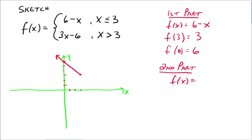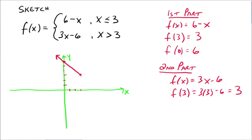Now let's do the second part: f of x equals 3x minus 6. We figure out what's going on at x equals 3, even though we're not allowed to use 3 for this piece. That would be 3 times 3 minus 6, which is 9 minus 6, which is also 3. So we get the ordered pair 3, 3 again, which is already included from the first part. When a point is included in one part, included always rules — so we just leave it as the solid point.